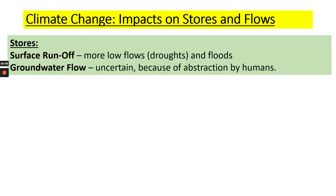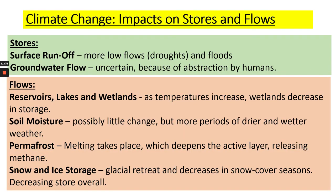Climate change also has an impact on stores and flows. We're going to see more surface runoff, more low flows, and more extremes of droughts and floods. Groundwater flow is uncertain in future — although there will be more droughts and floods and changes in rainfall, abstraction by humans from aquifers makes this difficult to predict. In terms of flows, reservoirs, lakes and wetlands will see temperature increases and wetlands will decrease in storage. Soil moisture will possibly change but not very much, and there will be more periods of alternating drier and wetter weather with more intense rainfall.